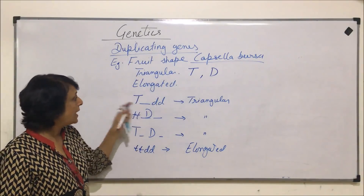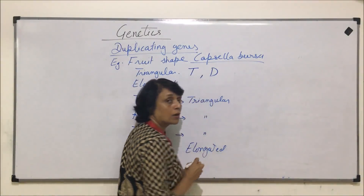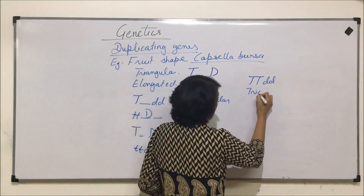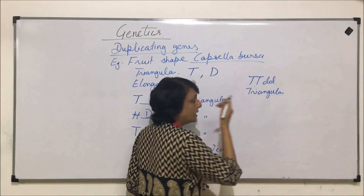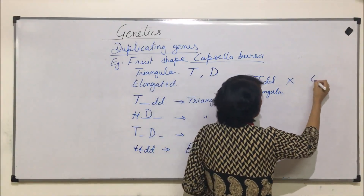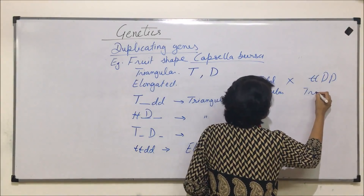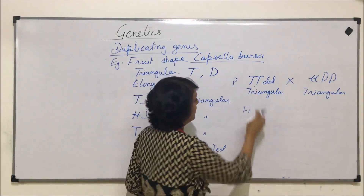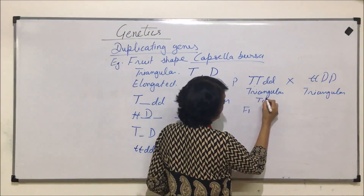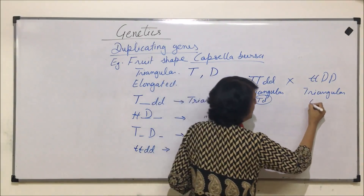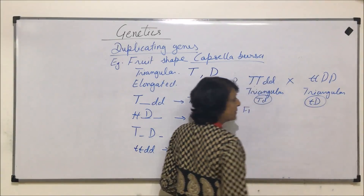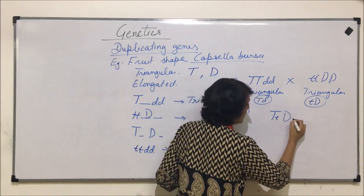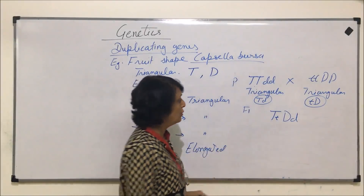To find the ratio, we start with a pure line. The pure line could be TT DD — the shape is triangular since T and D express the same phenotype. We cross this with tt DD, which is also triangular. This is the parent generation. In F1, the first plant produces gametes with one dominant T and one recessive d, while the other produces recessive t and dominant D. So in F1, we get plants heterozygous for both T and D, which are also triangular.